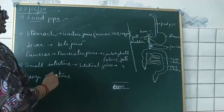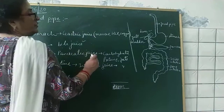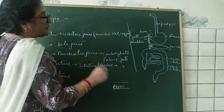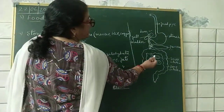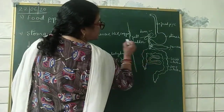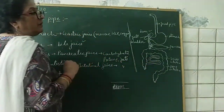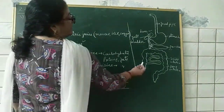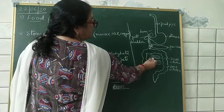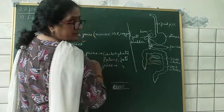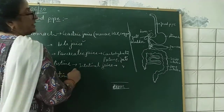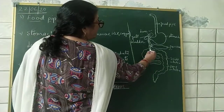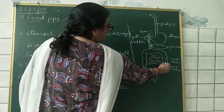So if the question comes — where does the complete digestion of food take place? — you can say small intestine. Where does the absorption of food take place in our body? That is also the small intestine.